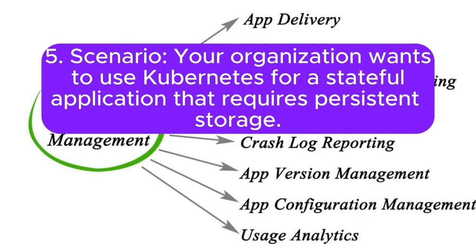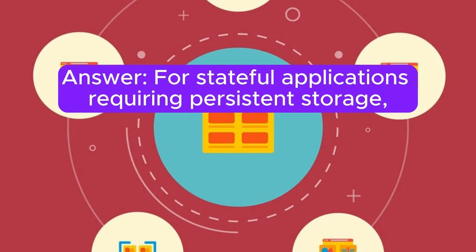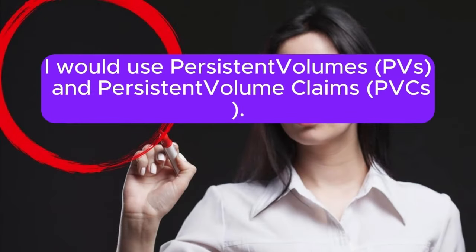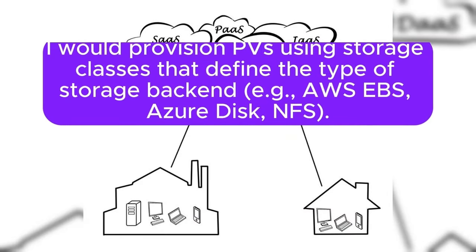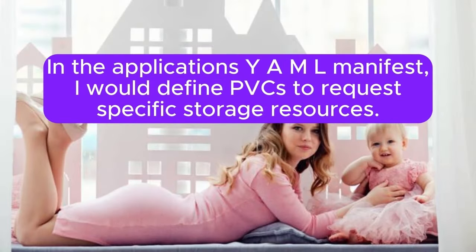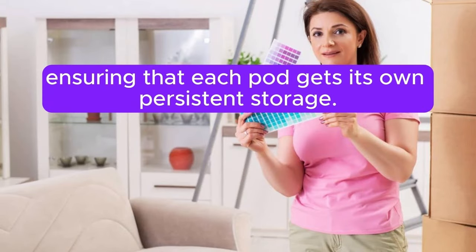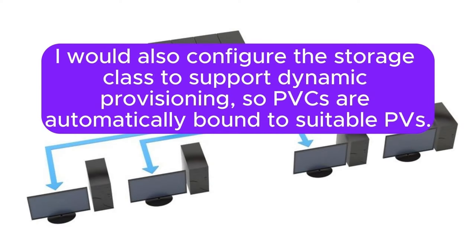Scenario 5: Your organization wants to use Kubernetes for a stateful application that requires persistent storage. How would you configure persistent storage? Answer: I would use PersistentVolumes (PVs) and PersistentVolumeClaims (PVCs). I would provision PVs using storage classes that define the type of storage backend, for example AWS EBS, Azure Disk, or NFS. In the application YAML manifest, I would define PVCs to request specific storage resources. The StatefulSet resource would manage the deployment of stateful applications, ensuring each pod gets its own persistent storage. I would also configure the storage class to support dynamic provisioning.